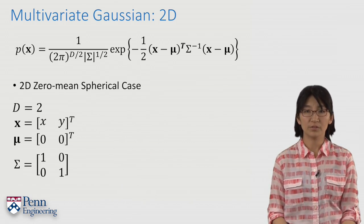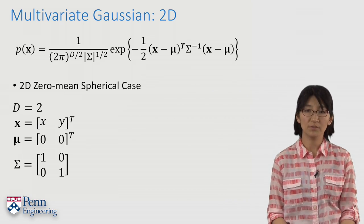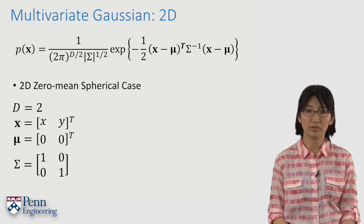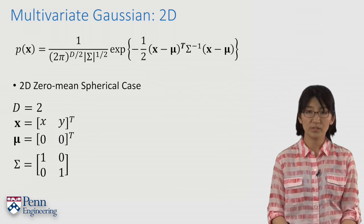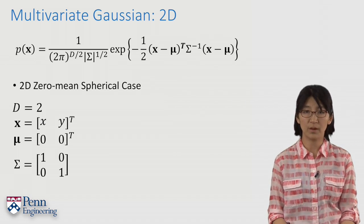It is easier to start from a special case where the distribution has zero mean, unit variance, and zero correlation terms. We shall see how our distribution changes in 2D with different values of the parameters.